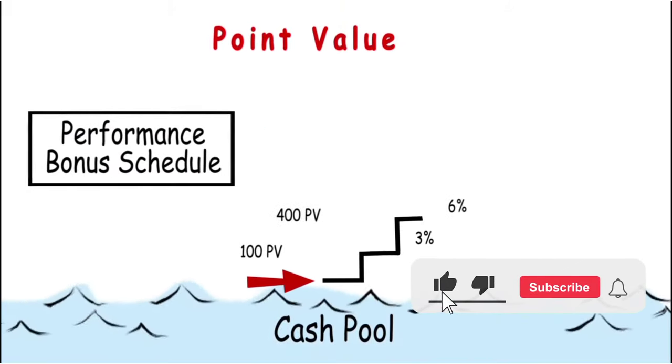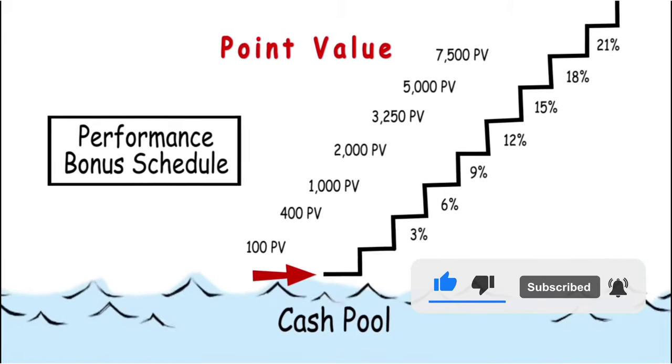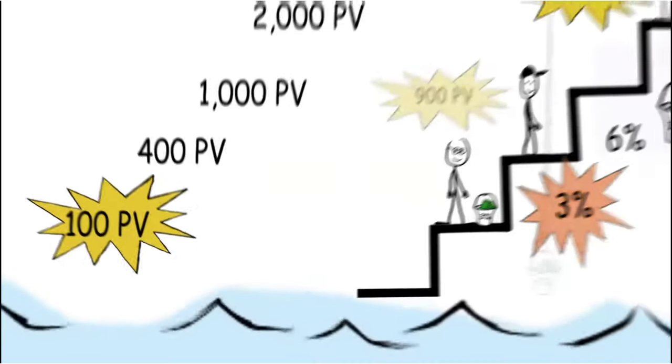The higher your PV, the higher the percentage of your BV you'll receive as a payment, from 3% all the way up to 21%.